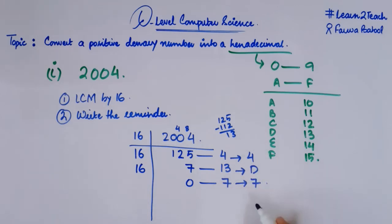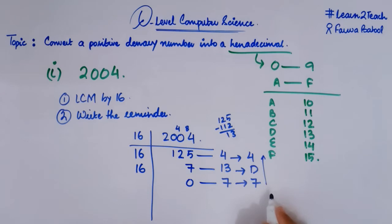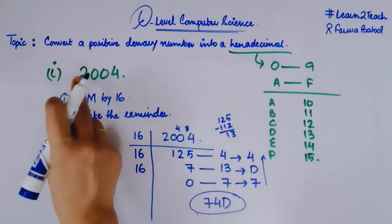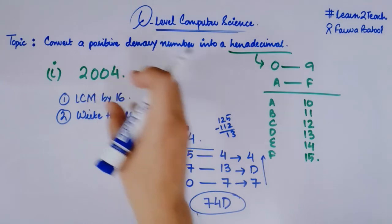My hexadecimal number has almost been calculated. What I need to do last is write these remainders in a reverse order, from lower to upward position. I have to write 7 first, the last one, then moving towards upward, then I have D, then I have 4. So this is my required 7D4. This is the required hexadecimal equivalent for this 2004. This is how we have converted a denary or a decimal number into a hexadecimal one.